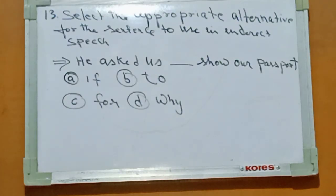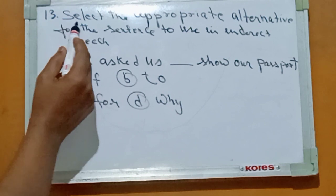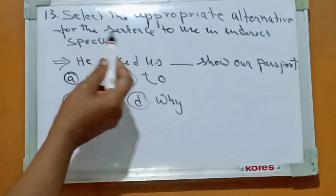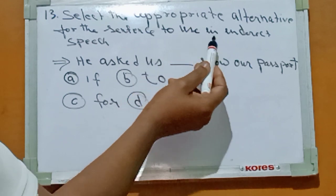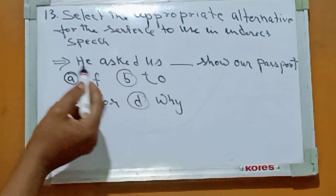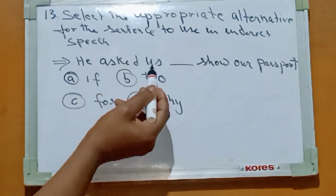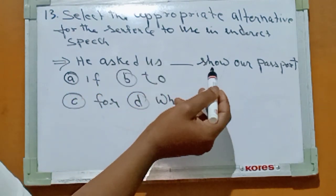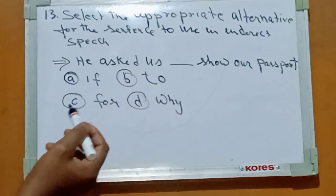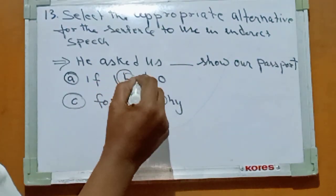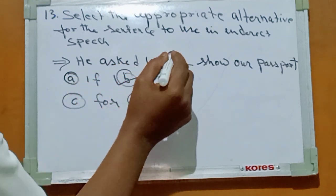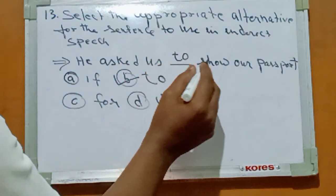Number thirteen: select the appropriate alternative for the sentence to use in indirect speech. The sentence is: he asks us blank show our passport. The right answer is Option B: to. He asks us to show our passport.